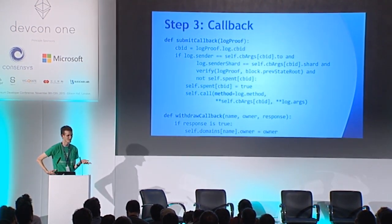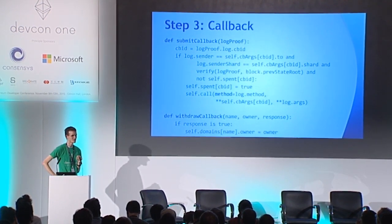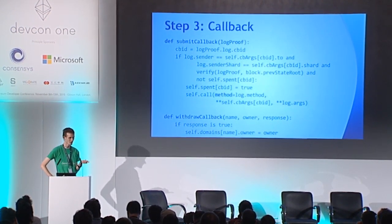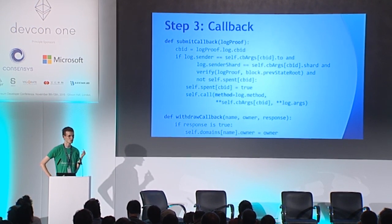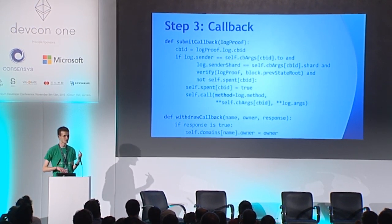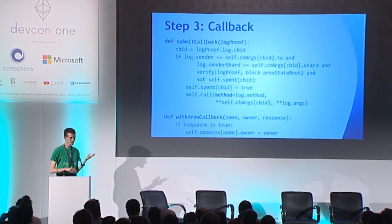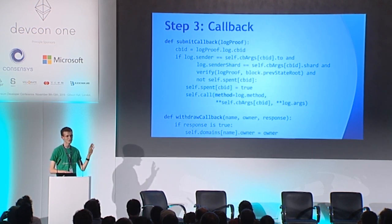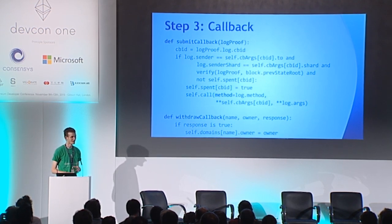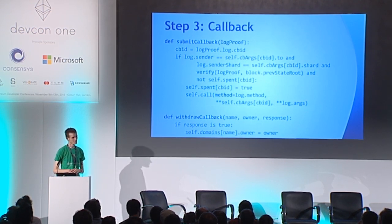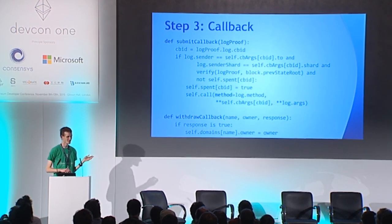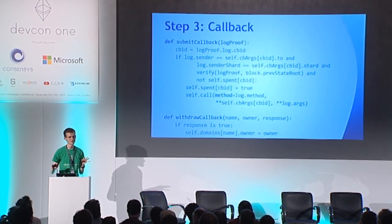The method processes the withdrawal: it checks, number one, have I authorized the registrar to withdraw my Gafcoin? Number two, do I have enough balance? If both of those are true, it debits my Gafcoin balance, gives the name registrar my Gafcoin, and returns success. Otherwise, it returns fail.